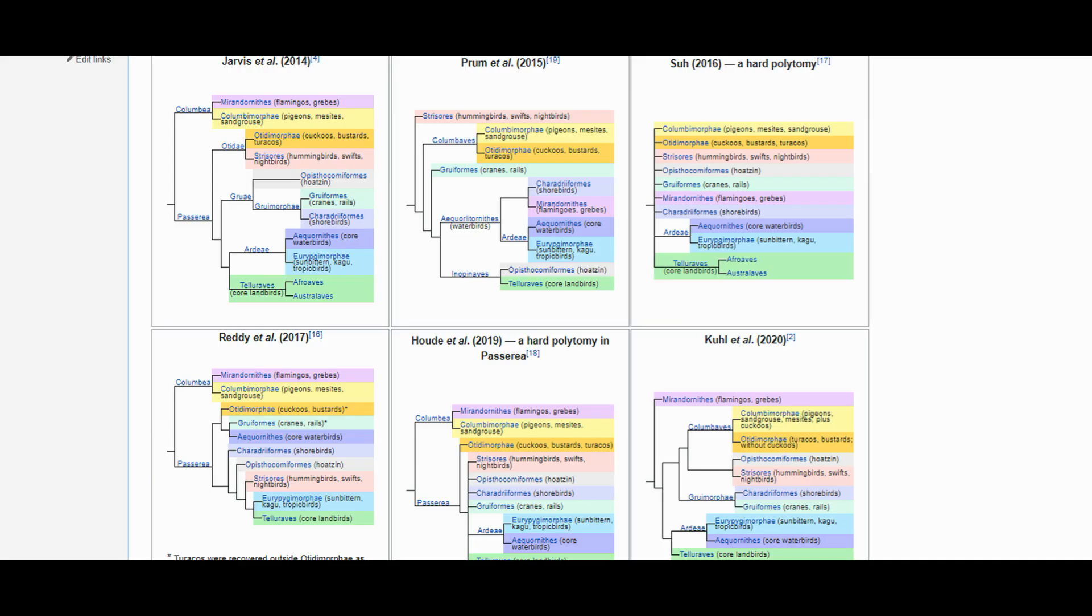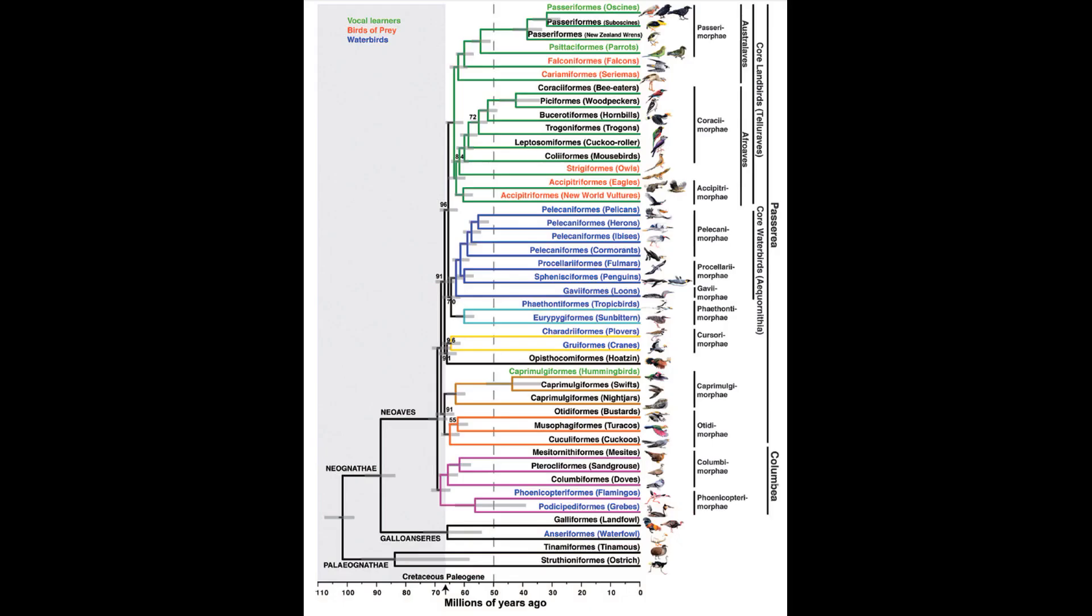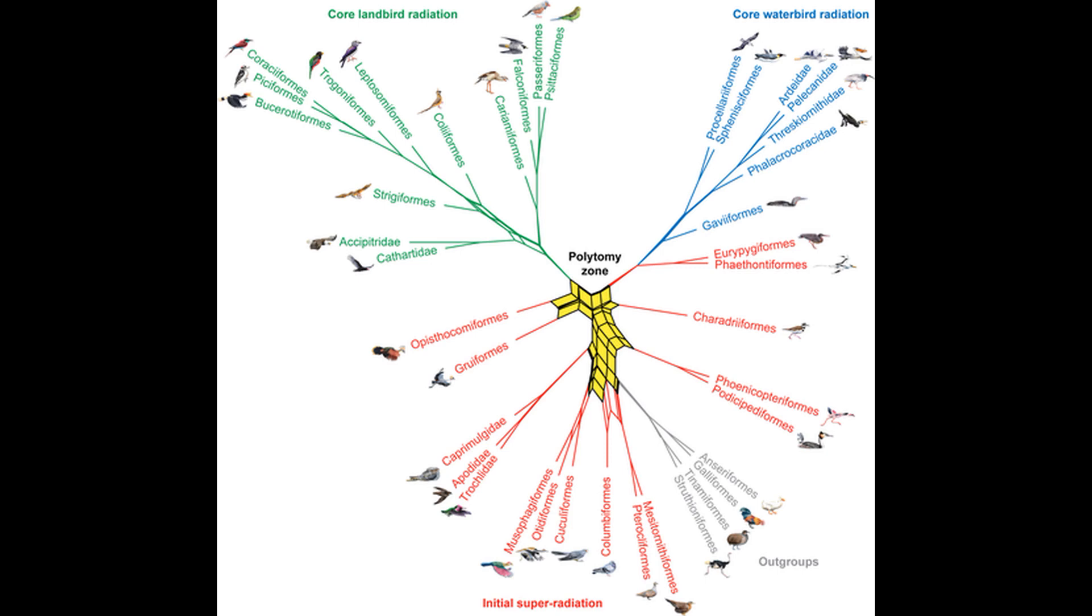Neoaves consists of 10 well-supported clades. However, how these 10 clades relate to each other has been highly controversial, as studies often present widely different topologies. It appears that at the base of the Neoaves, there was an extremely rapid diversification event that coincided with the end-Cretaceous mass extinction 66 million years ago. During this diversification, the 10 clades diverged from each other within a relatively short time frame. This rapid divergence would make resolving the phylogeny extremely difficult due to ILS, and some researchers have argued that a simple bifurcating phylogeny would be inadequate to accurately depict the complexity of this evolutionary radiation.